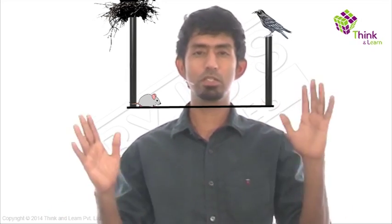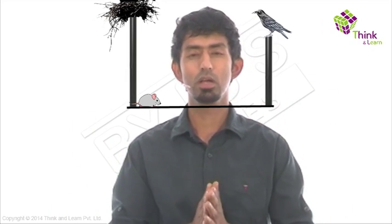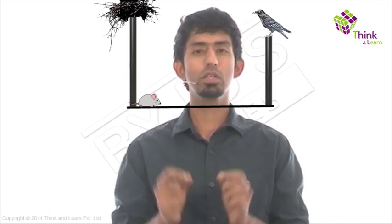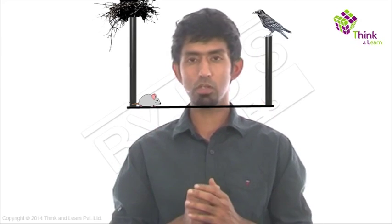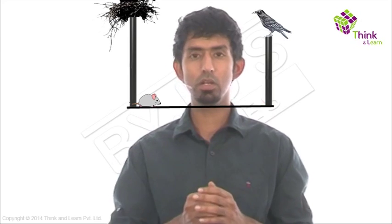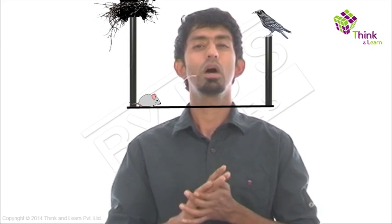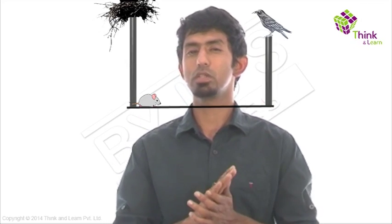We have a very simple situation here. The question is, where must the crow catch the mouse? Should it catch it when it's right close to that pole, very close to this pole, when it's right in the middle? Where exactly? How do we answer such a question? Think about it.